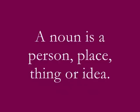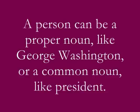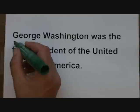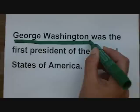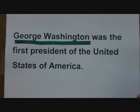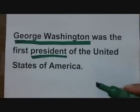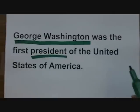When we're looking for nouns in sentences, we're looking for a person, a place, a thing, or an idea. A person can be a proper noun, like George Washington, or a common noun like president. George Washington is a person — there is a real human being with that name, therefore George Washington is a noun. Because George Washington stands for someone specific, we call it a proper noun, but it's still a noun. The word president is also a person, but because it stands for a whole bunch of different people, we call it a common noun. It's still a noun.